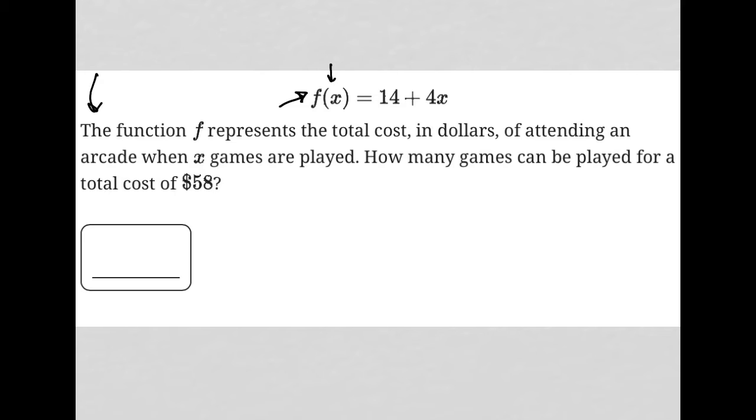So this f of x here is total cost, and x represents the number of games. How many games can be played for a total cost of $58?